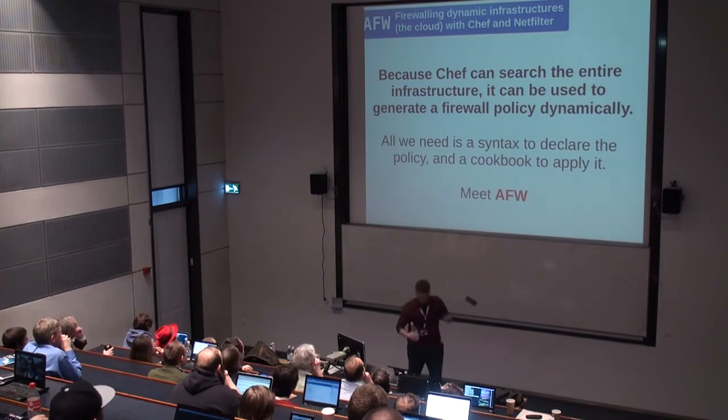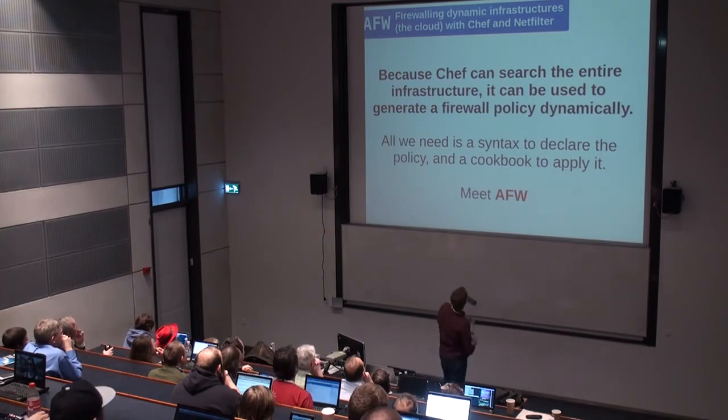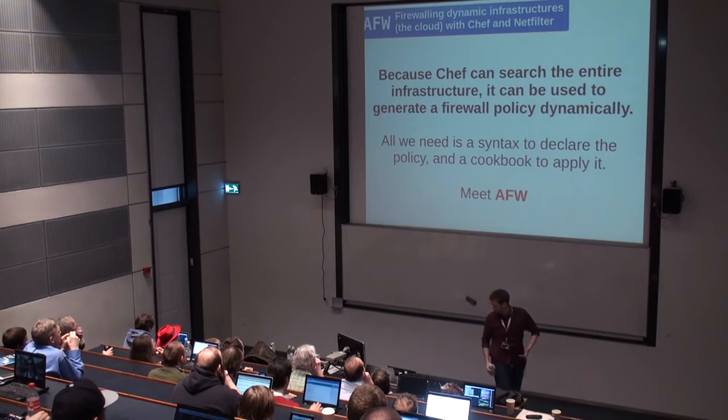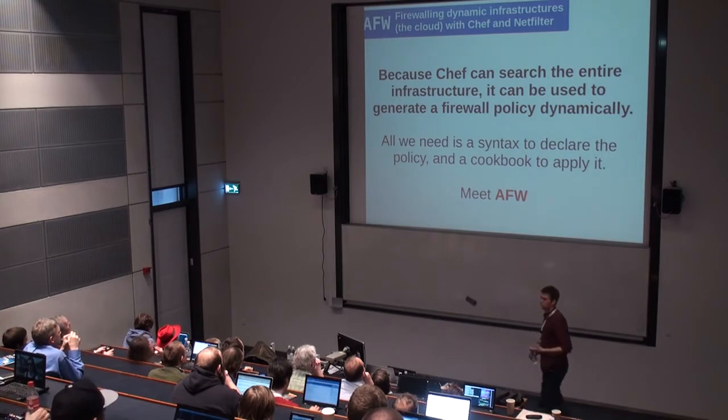Here's an example of Chef search. The 'knife' client is a tool you run as a system administrator to retrieve data from the Chef server. We're searching for all nodes that have the role 'web frontend' and are in the environment named 'staging' — and that returns three nodes with their attributes, list of roles, list of recipes, and the platform they're running on. In actual code, everything in Chef is written in Ruby. If you want to search for a list of OSSEC agents, you write a recipe that searches nodes matching 'roles:ossec_agent AND chef_environment:prod,' then loop over the results to do something with each agent. Because Chef can search the entire infrastructure, it can generate a firewall policy automatically.